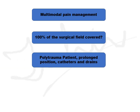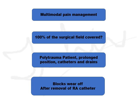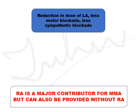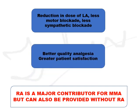In polytrauma patients, there are multiple sites of injury, prolonged positioning, pain from multiple catheters and drains — requiring additional analgesics. And what if your block wears off after removal of the RA catheter? You need a pain management regimen for that. Multimodal analgesia also reduces the doses of local anesthetics, resulting in less motor blockade and less sympathetic blockade, providing better quality analgesia and greater patient satisfaction. Regional anesthesia is a major contributor to multimodal analgesia, but MMA can also be provided without regional anesthesia.